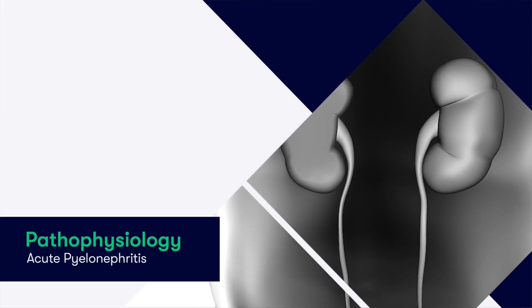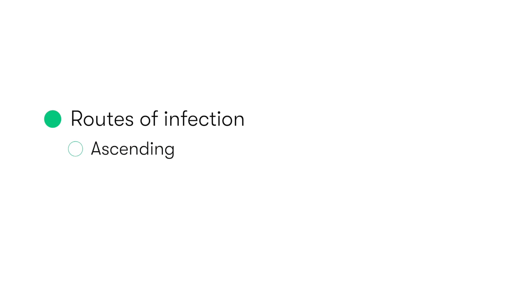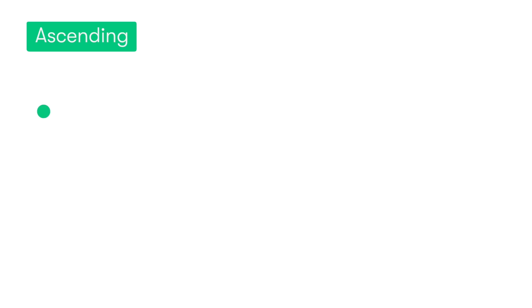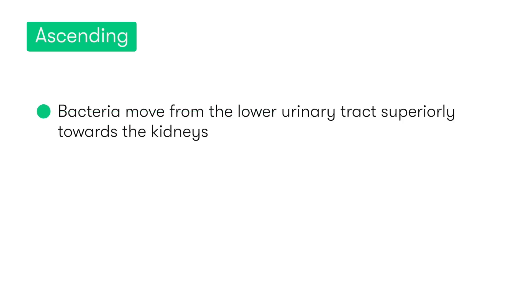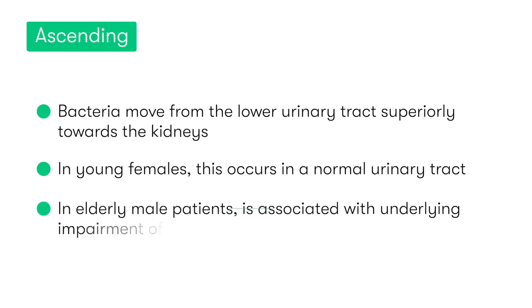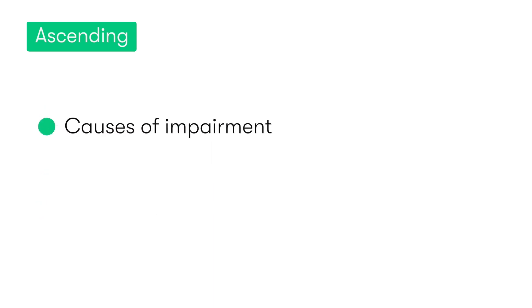Moving on to pathophysiology: when we look at urinary tract infections and pyelonephritis, there are three primary routes of infection. They can be ascending, hematogenous — for example, in a patient who has infective endocarditis — and they can also be lymphatic. By far the most common route is the ascending route. With an ascending infection, bacteria move from the lower end of the urinary tract — the urethra and bladder — superiorly to affect the kidneys. In young females this typically occurs in the presence of a normal urinary tract, whereas in older males it is most commonly associated with underlying impairment of urine drainage.